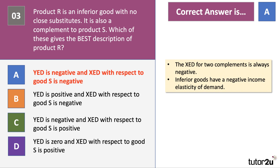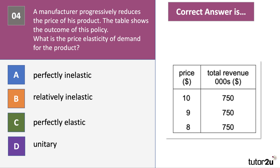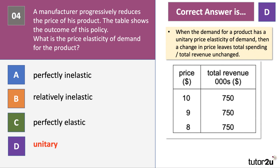Question 4: a manufacturer progressively lowers the price of their product. The table shows the price falling from $10 to $9 to $8, but total revenue stays the same in dollar terms. The question asks: what is the price elasticity of demand for the product? The firm is lowering the price but total revenue — or total spending by consumers — remains at $750,000. This implies unitary price elasticity of demand: when elasticity equals 1, any change in price leaves total revenue unchanged. The correct answer is unitary elasticity.